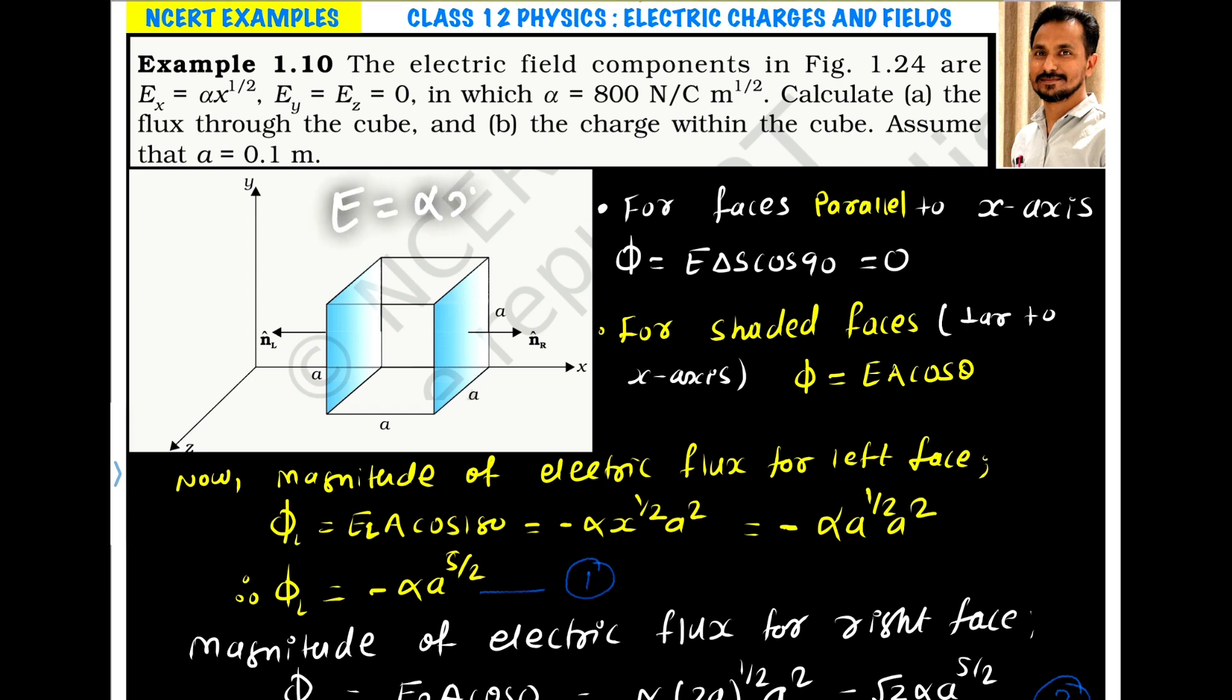The electric field is given by E = α x^(1/2). So it is α x^(1/2) times a² times cos 180, which is minus. Instead of x, the distance of this face from origin is a, so x = a. This gives α a^(1/2) a², which equals a^(5/2). So the flux through the left face is -α a^(5/2).